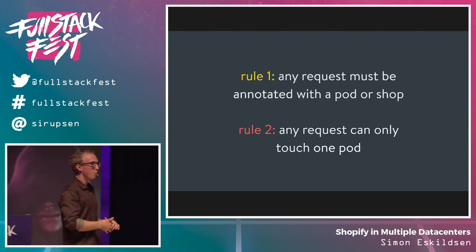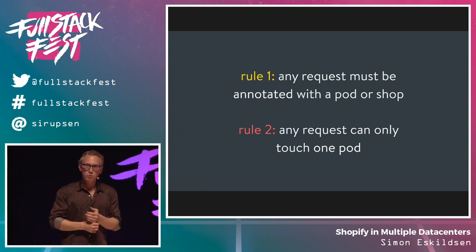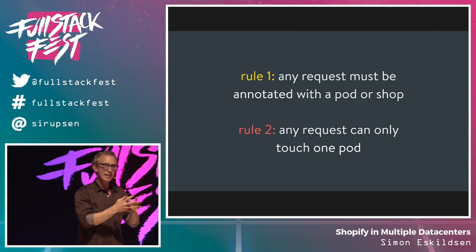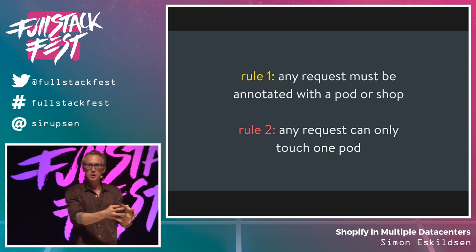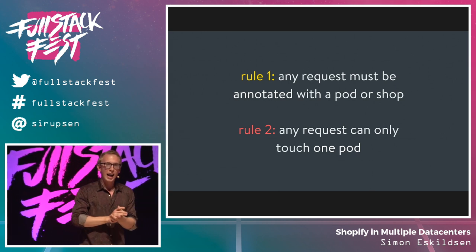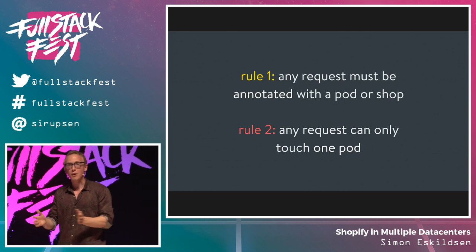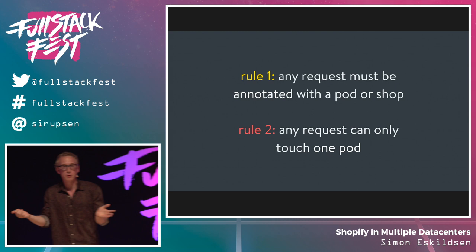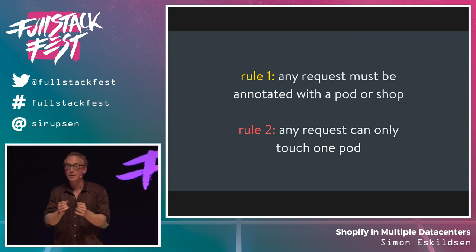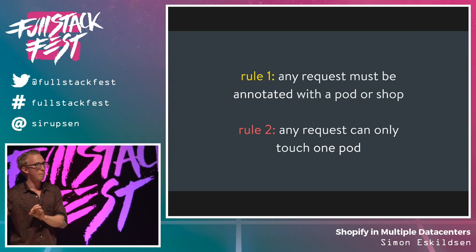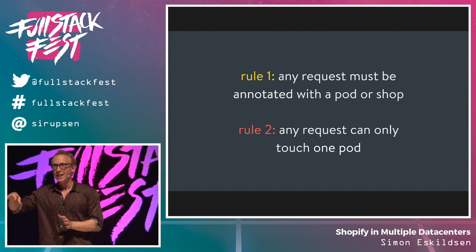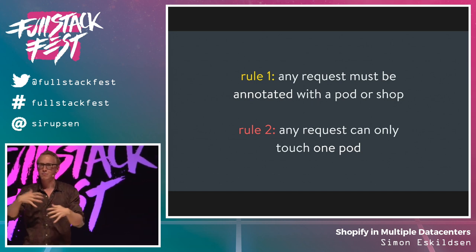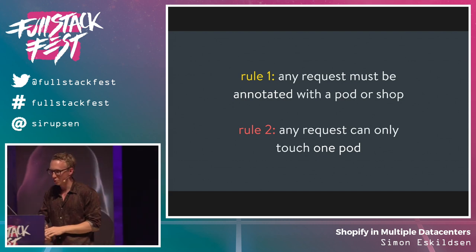With this architecture, we need to set up rules for how Shopify operates. Rule number one: any request that comes into sorting hat needs to be annotated with where it's going. Sorting hat needs to decide what shop and what pod a request belongs to. If sorting hat in Chicago can't figure out which shop the request belongs to, it can't know whether to send it to Amsterdam or Asia — it will just error. So every single request must honor that rule. Rule number two: any request can only touch one pod. If a request touches multiple pods and multiple Shopifys, you might do a request to Amsterdam that also needs to reach Asia and North America in the same request — that's a mess with really bad resiliency consequences.